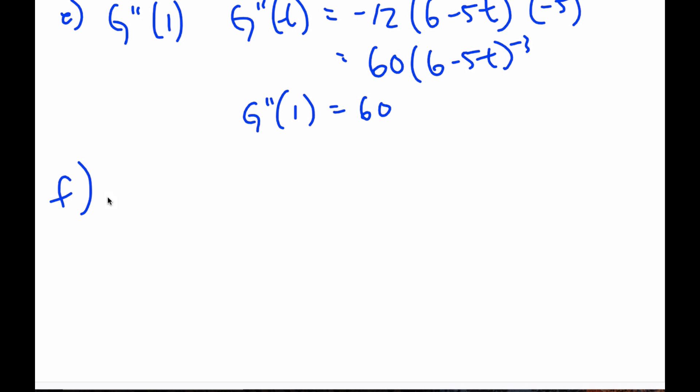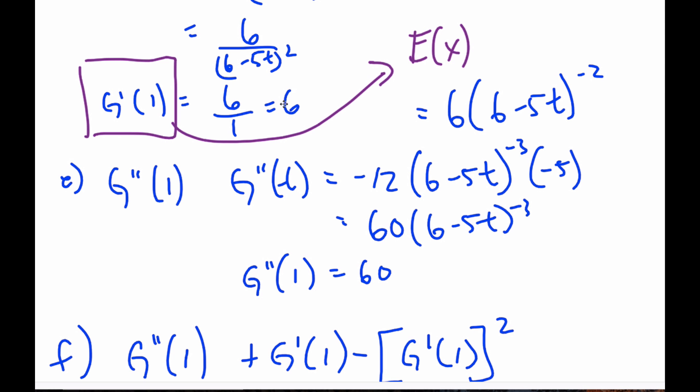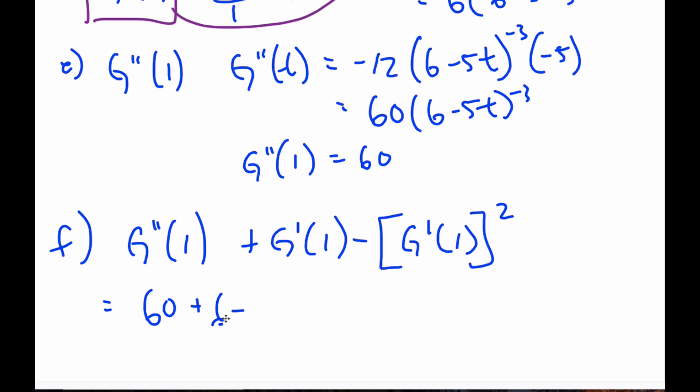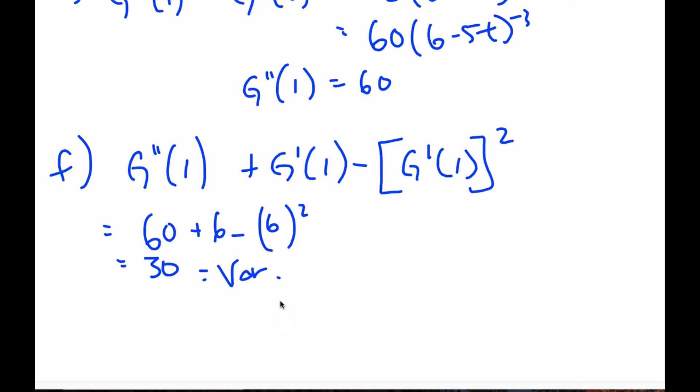F part now says to compute G double prime one plus G prime one minus G prime one squared, which seems like a fairly random computation. But when we do this calculation, I get 60 plus six minus six squared. When I do this computation, that is 30. And so this you can see was what the variance was of X.